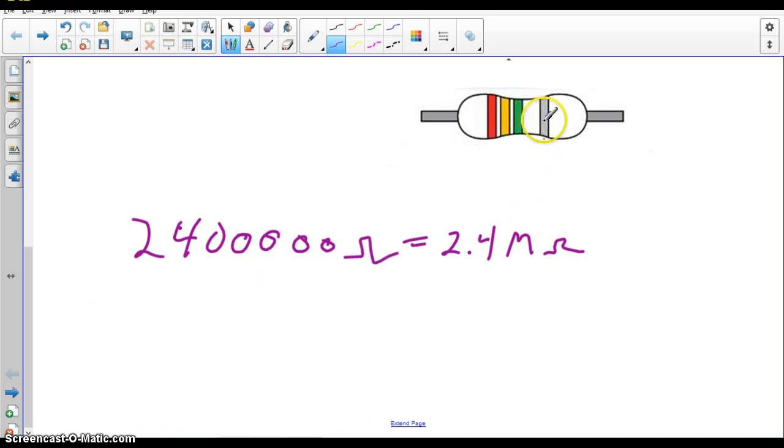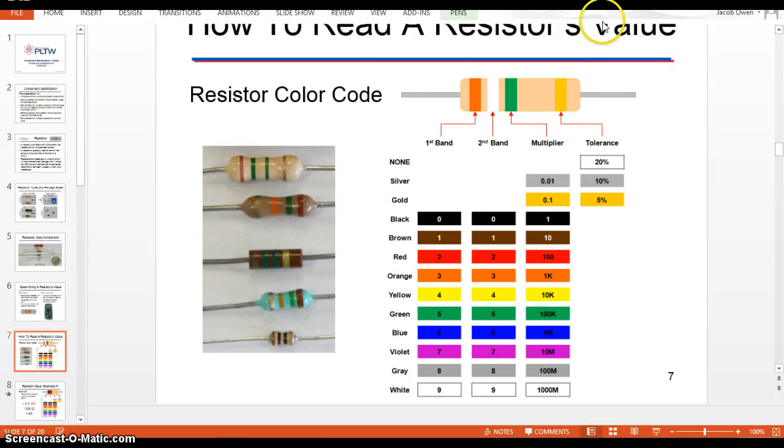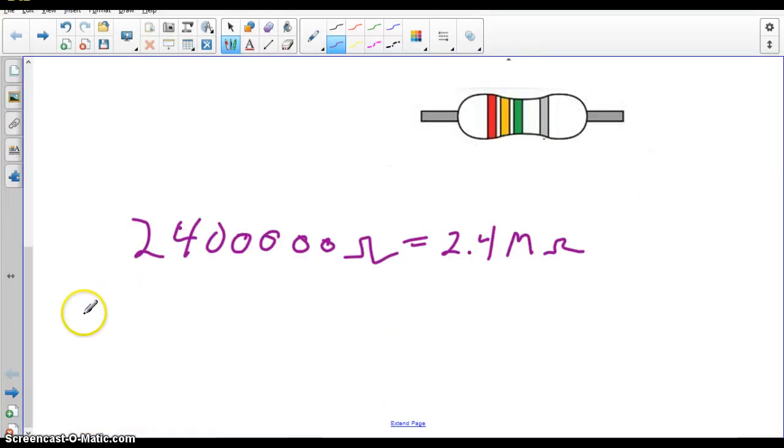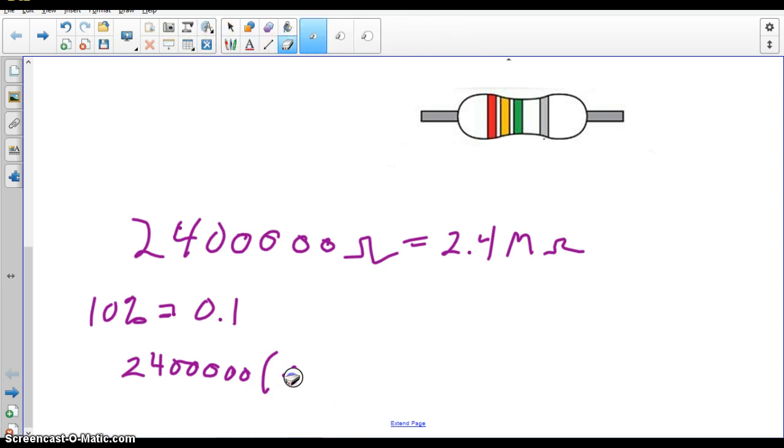How you find the tolerance is silver. So that's 10%, right? So the actual value we know, according to the manufacturer, is going to be plus or minus 10%. So 10% equals 0.1. So you do the 2.4 million times 0.1. It's only four zeros instead of five.